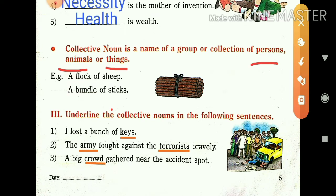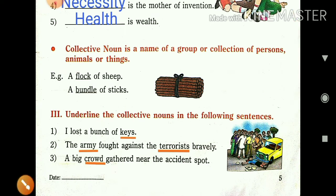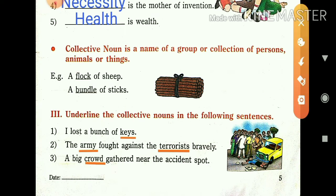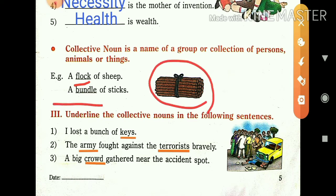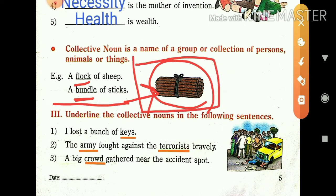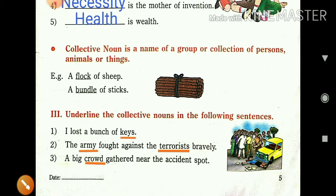Let us go through examples and you will understand it. First: a flock of sheep. Flock means a group of sheep — particularly the group of sheep is called a flock. F-L-O-C-K. There is a particular name for the group of sheep. Next, a bundle of sticks — the collection of sticks is called a bundle, and bundle is the collective noun.